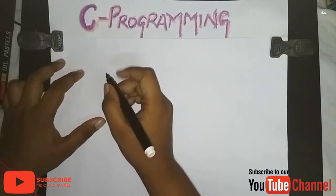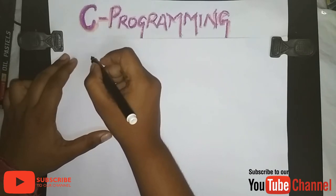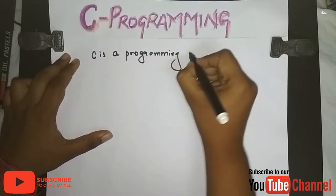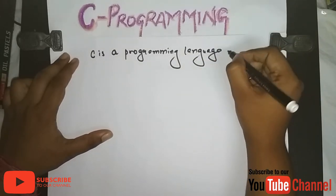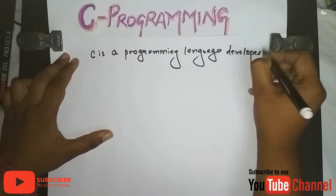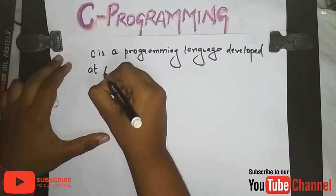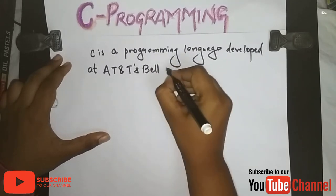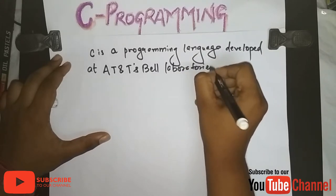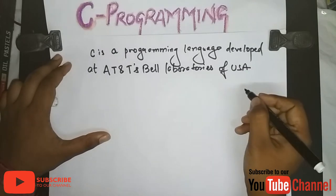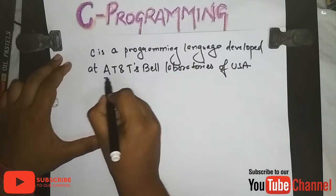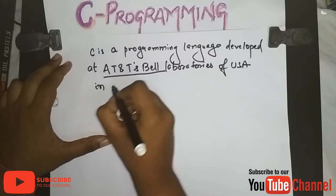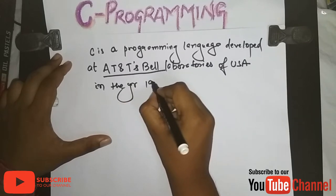For people who would like to know the history of C: C is a programming language developed at AT&T's Bell Laboratories in USA, in the year 1972.